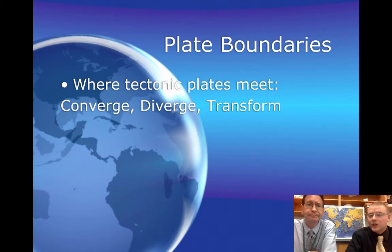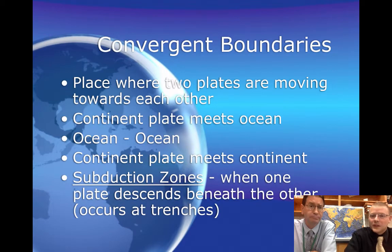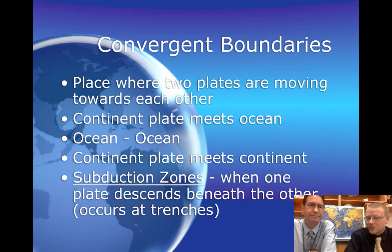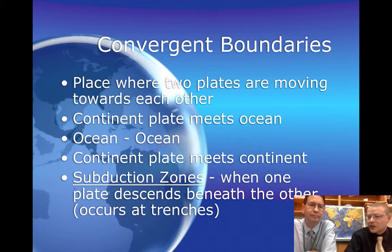When talking about convergence, we've got two plates that are coming together — they're colliding. So C for convergence, C for colliding. It can happen for every single type of crust you could have — a continental plate or an ocean plate — and one plate usually ends up going under the other.